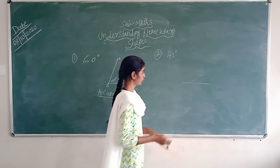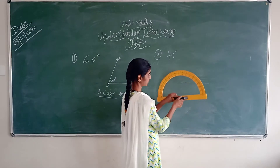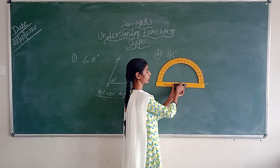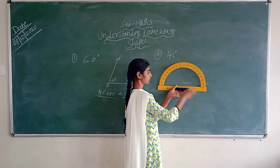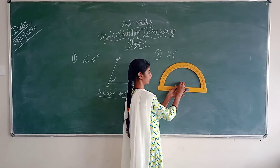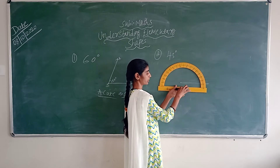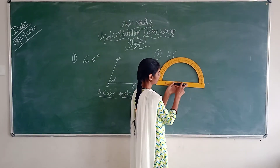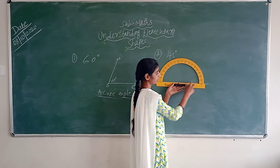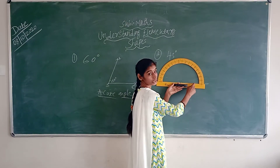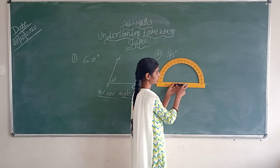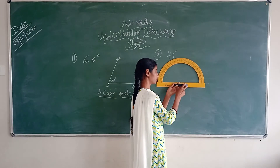Then second step: you have to place this protractor like this. Please make sure that the vertex point and this vertex should match. So you have to place them on each other. Then this line should follow each other — so in that way you have to arrange.